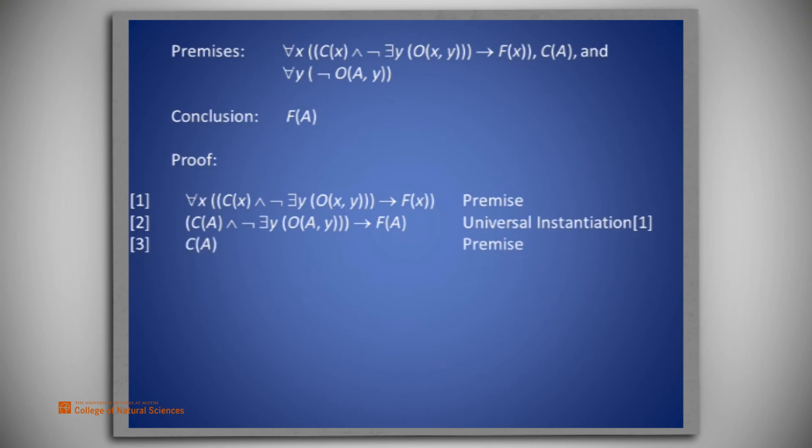Now let's put our second premise, C(A), down on line three. And on line four, let's put the third premise, for all y, not O(A, y). Now let's do a quantifier exchange to line four.